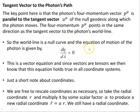The world line is a null curve, and the equation of motion for the photon is given by dU, the vector U, the four velocity, d lambda differentiated with respect to lambda, zero. This is a vector equation, and since vectors are tensors, then we know that this equation holds true in all coordinate systems.